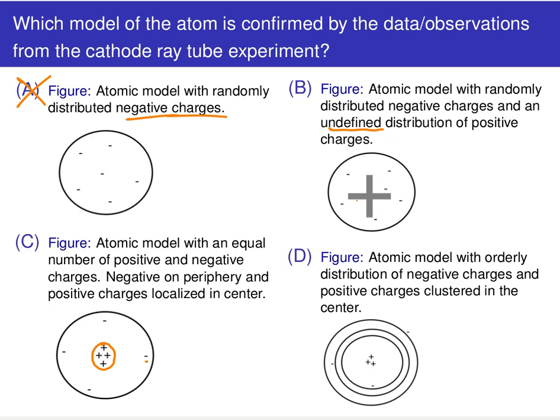B, C, and D all have the presence of positive and negative charges. But notice that both C and D assume a structure for the positive charge — and D goes further and assumes a structure for the negative charge as well.